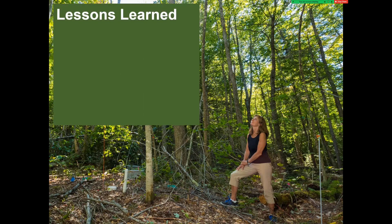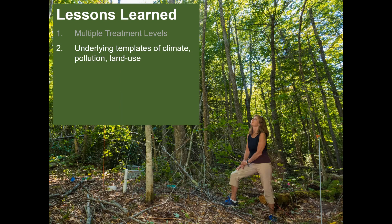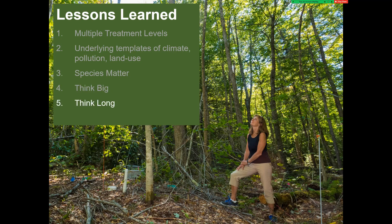Here are some lessons learned from our experiment. First, multiple treatment levels were super important to evaluate tipping points and to gain a perspective on what to expect across a gradient of naturalizing events. Second, underlying templates of climate, pollution, and land use matter — we suspect that our lack of a nitrogen response was due to the overall lower nitrogen status of the site and the tighter cycling of this nutrient now compared to 1998. Third, species and canopy position matter — pick your sites carefully. Here we saw very different responses between the overstory maples and the understory beech. Fourth, think big — we thought our 20-by-30 meter plots were big, but they still weren't big enough; we had shading from nearby intact canopy and roots infiltrating the site from trees outside the plots. Fifth, think long-term — tree response evolved over time. And sixth, be safe — we put safety first, but we still had some near misses.